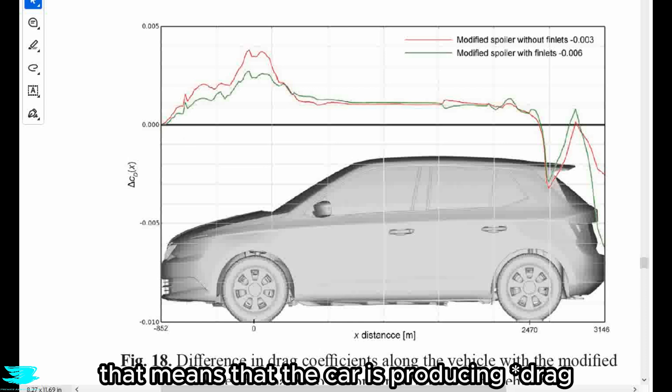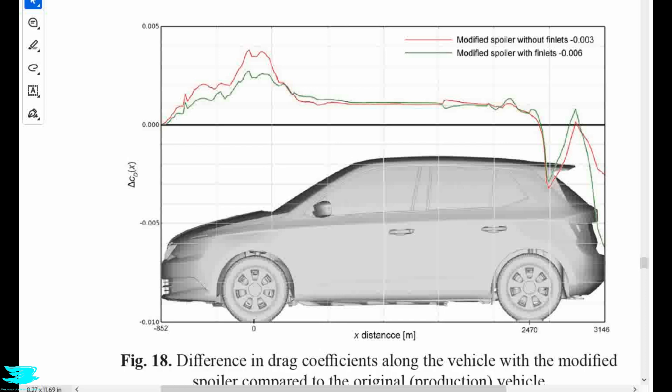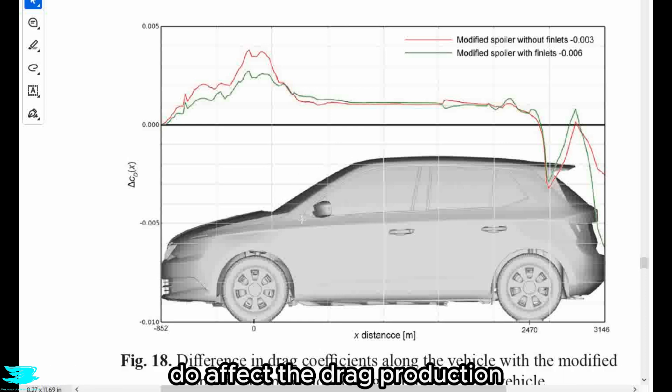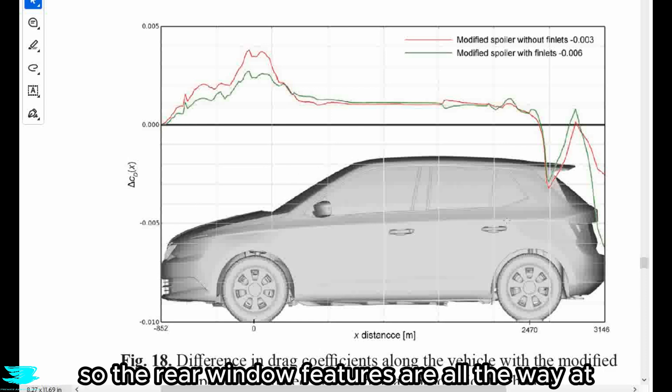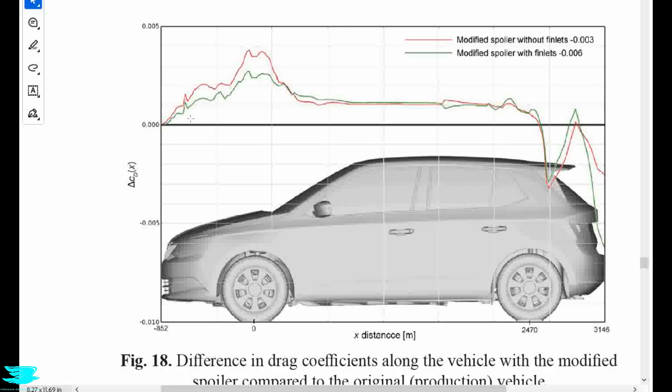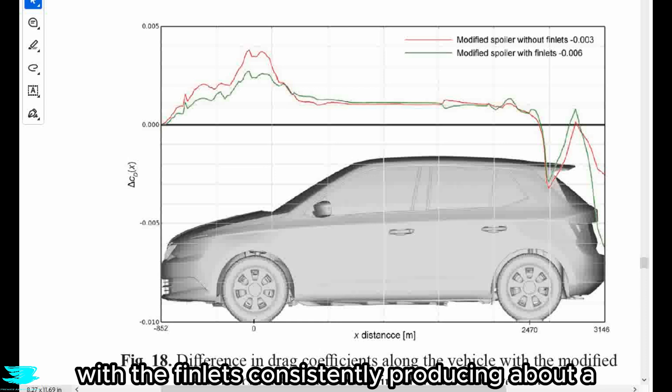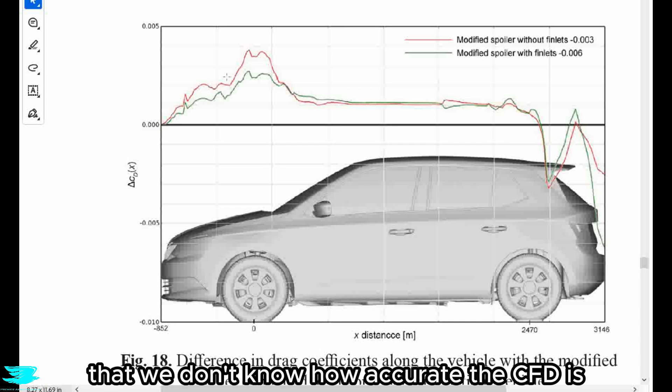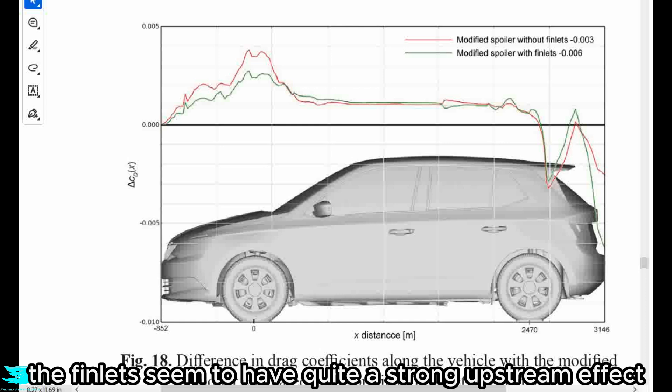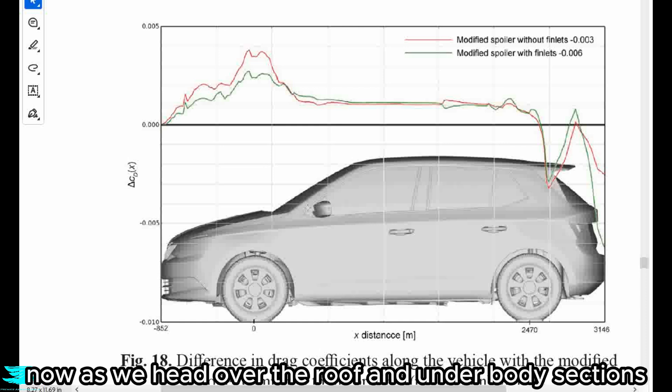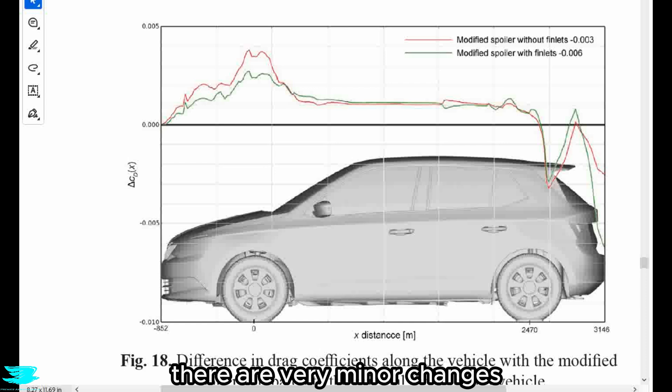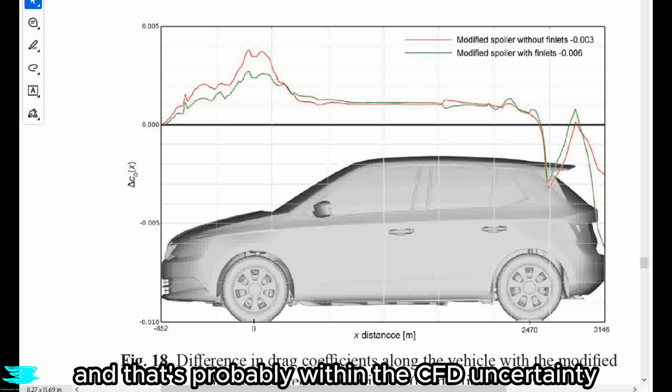Now, as we go along the car, for most of it, the values are positive. That means that the car is producing lift in the sense of the drag coefficient. Now at the front, we see that even here, the rear window features do affect the drag production. So the rear window features are all the way at the back of the car and the hood is being affected. They have strong upstream effects with the finlets consistently producing about a one count less drag coefficient over the hood. Now keep in mind that we don't know how accurate the CFD is, but still the finlets seem to have quite a strong upstream effect, which is important to note.